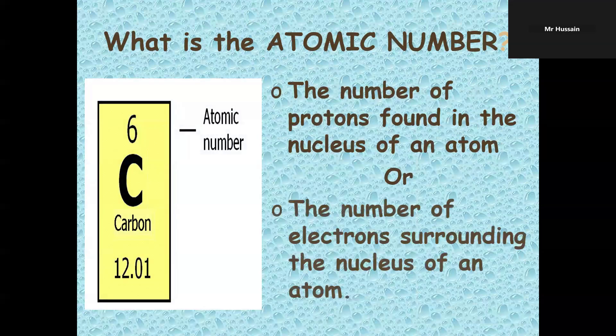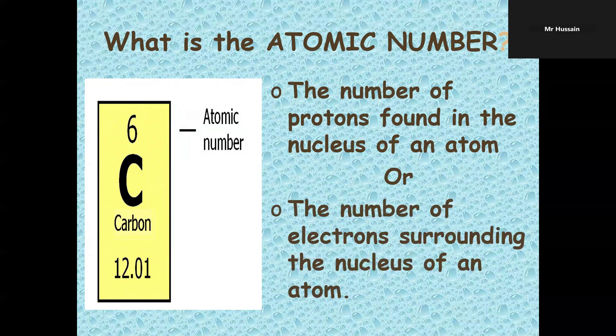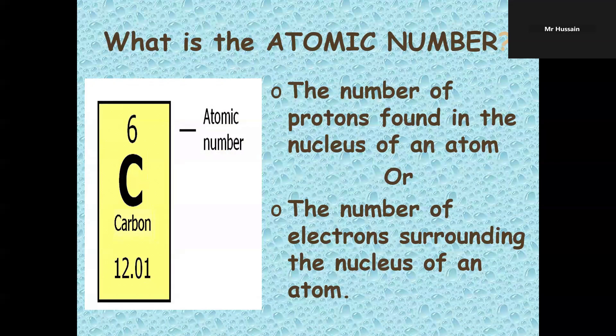What is the atomic number? The number of protons found in the nucleus of an atom, or you can say the number of electrons surrounding the nucleus of an atom.